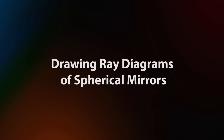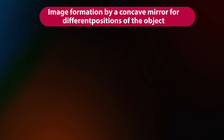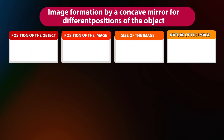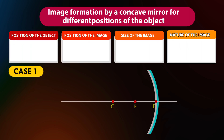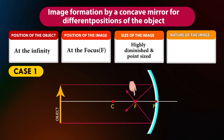First, let us draw some ray diagrams. Image formation by a concave mirror for different positions of the object. Case 1: If the position of the object is at infinity, the position of the image will be at the focus F. The size of the image is highly diminished and point-sized.